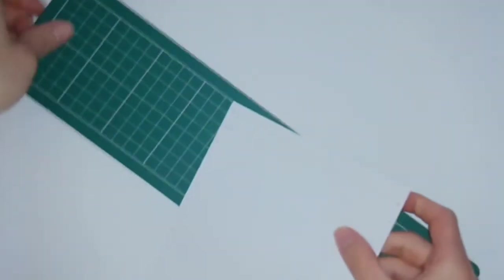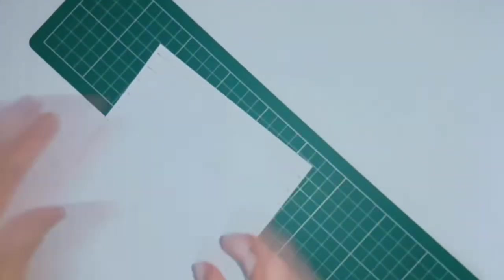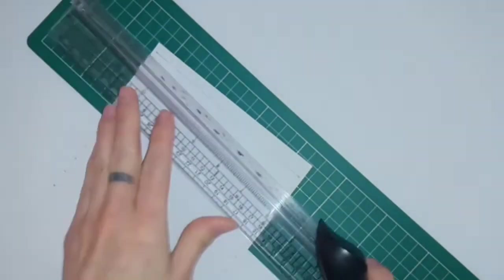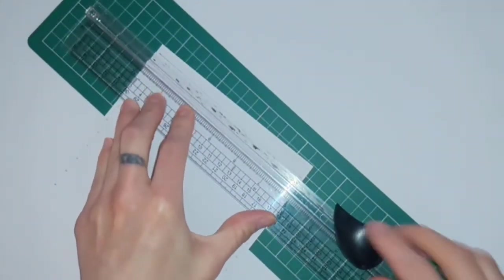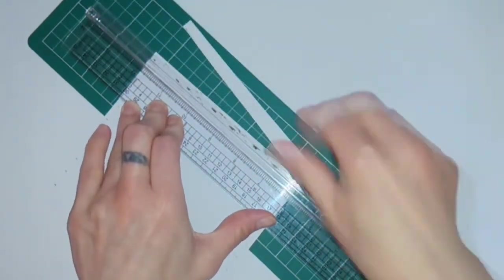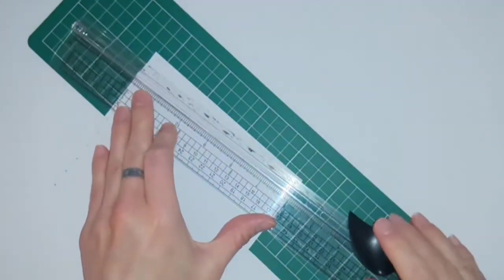If you're using a guillotine, you can just go from point to point along the edge of the paper and then cut. Let's get rid of the first piece because that won't be a triangle.